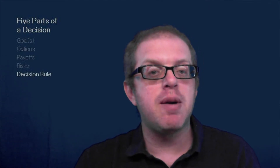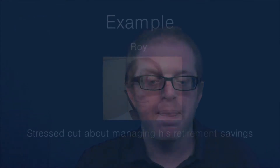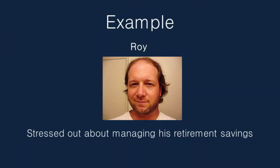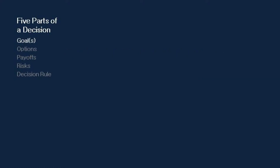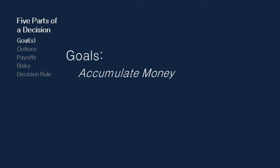Let's illustrate these five parts using an example. This is Roy and he's stressed out about his retirement savings. The issue Roy is facing is that he wants to find a way to manage his retirement savings well so that he has enough to retire on. The first step is to figure out what his goal is. If we don't know his goal, we don't know what to strive for or how to tell if we've done well or poorly. In this case, Roy's goal is to accumulate money — probably as much money as possible when he retires in about 20 years.